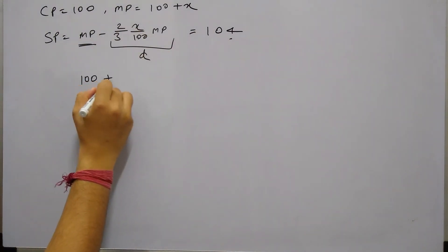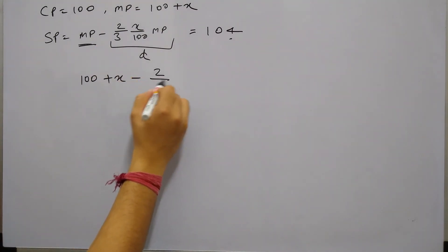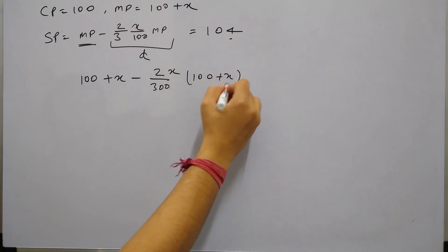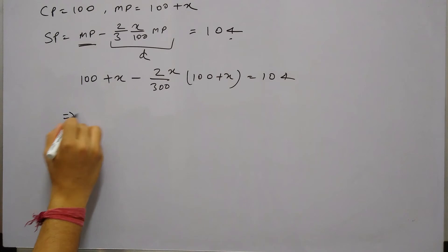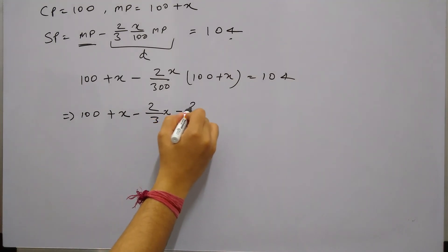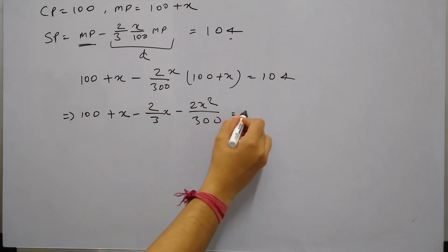So MP is 100 plus x minus 2/3 of 100 of x and MP is 100 plus x equals to 104. So this is 100 plus x minus 2/3 times 100 plus x equals to 104.